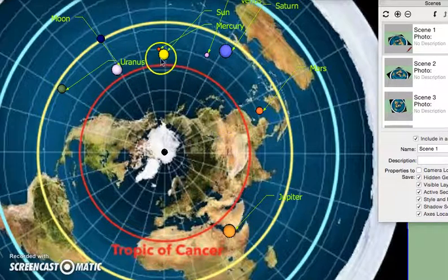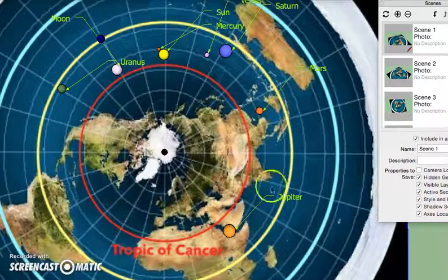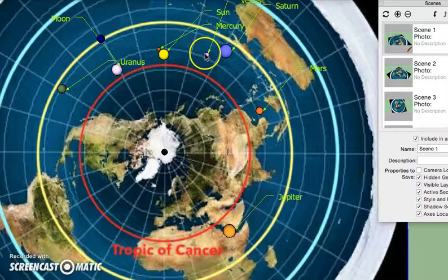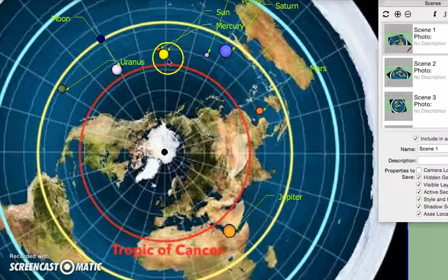All the planets except for Mercury and Venus do this. Mars, Jupiter, Saturn, Neptune, Uranus, they all do this. But Mercury and Venus, these two wandering stars, they do something peculiar.